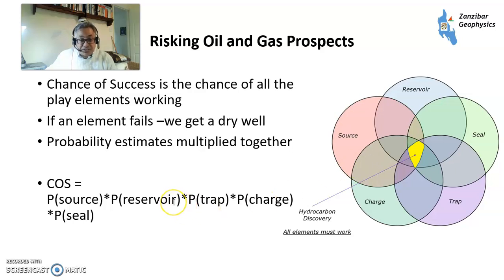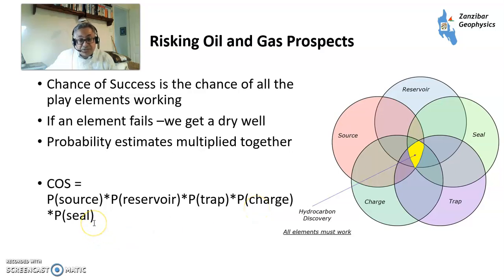Chance of success — the chance of getting the volume that you predict — is the probability of the source working, probability of the reservoir working, probability of the trap working, probability of the charge working, and the probability of the seal working. So you've got to be in this yellow blob.